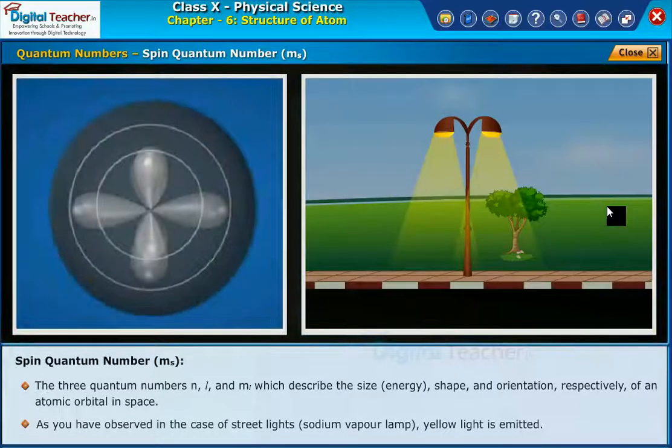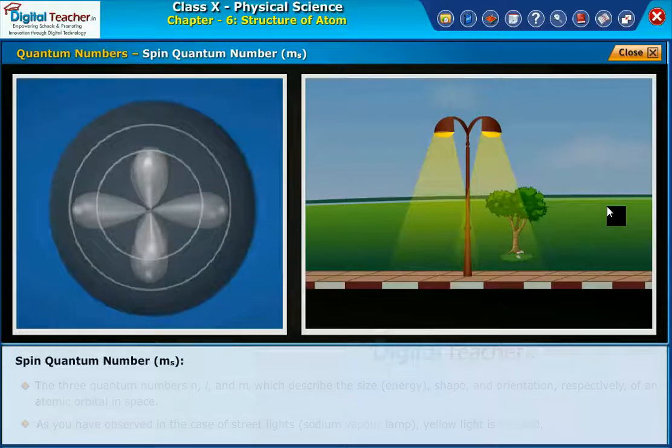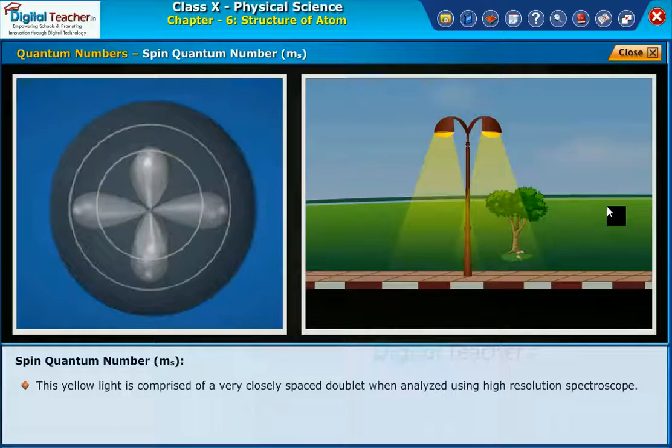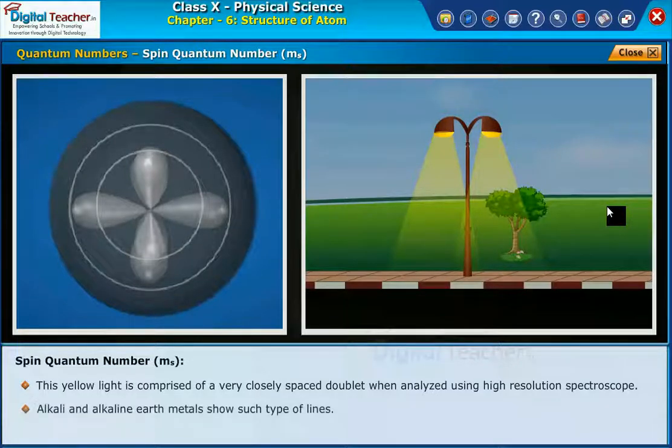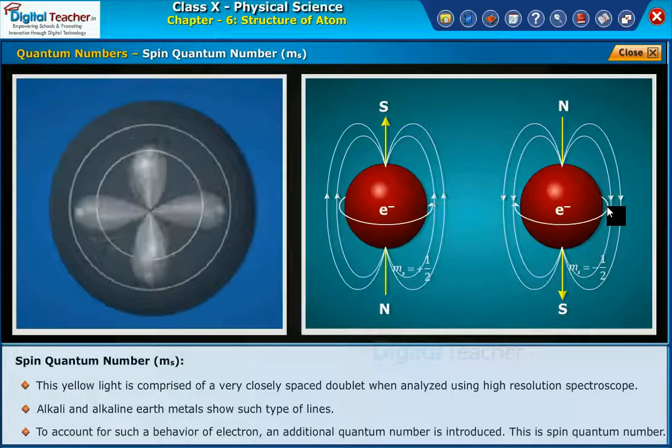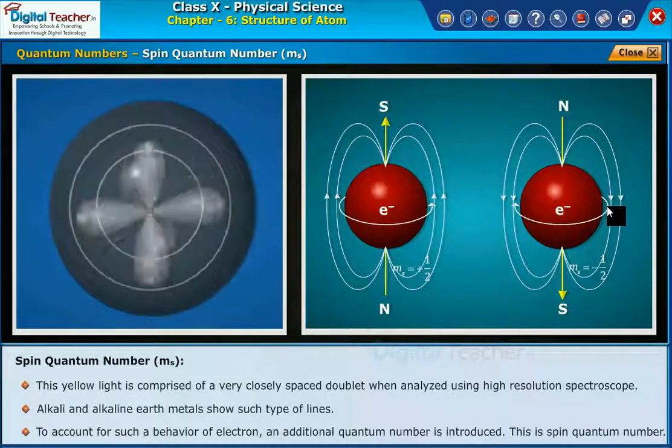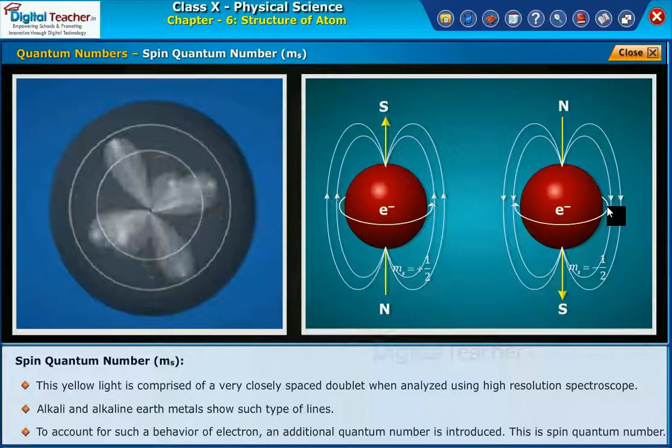As you have observed in the case of streetlights, sodium vapor lamp, yellow light is emitted. This yellow light is comprised of very closely spaced lines when analyzed using high-resolution spectroscope. Alkali and alkaline earth metals show such type of lines. To account for such a behavior of electron, an additional quantum number is introduced.